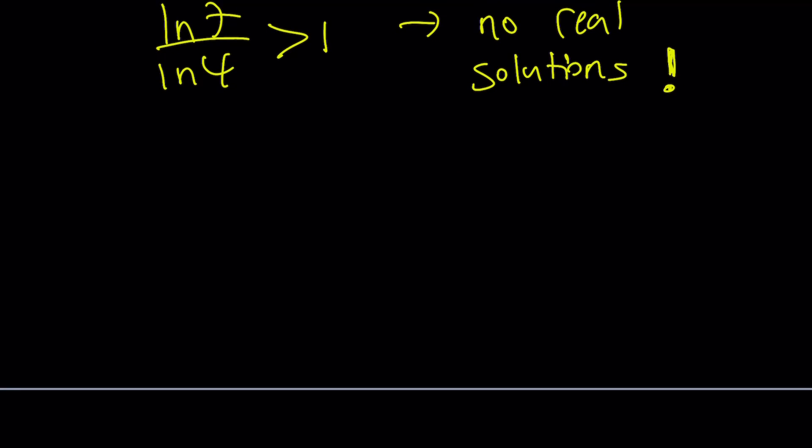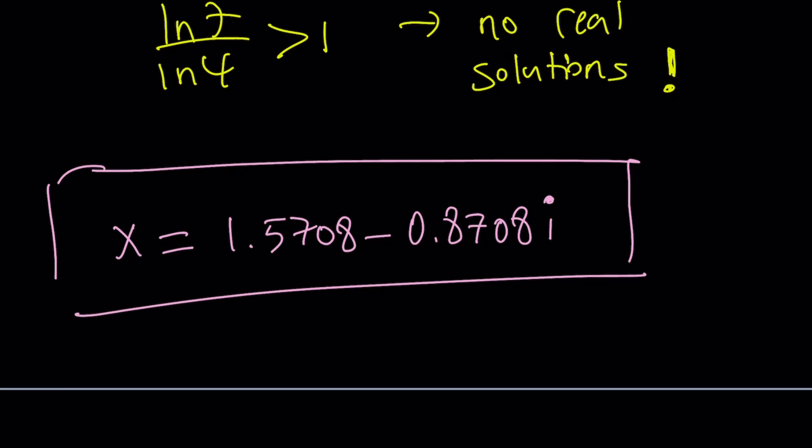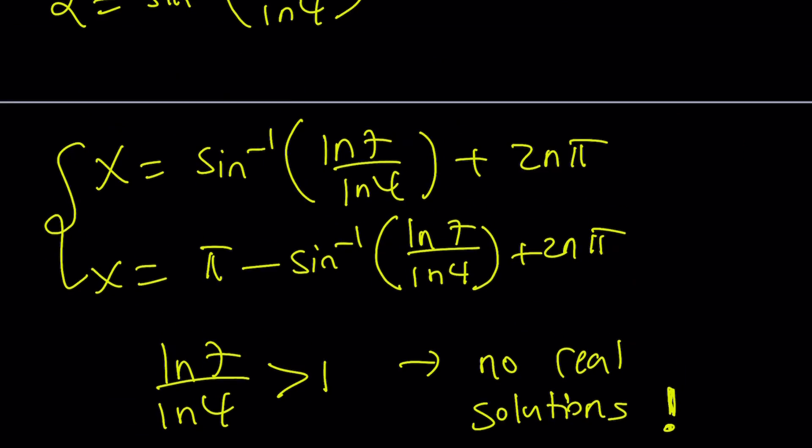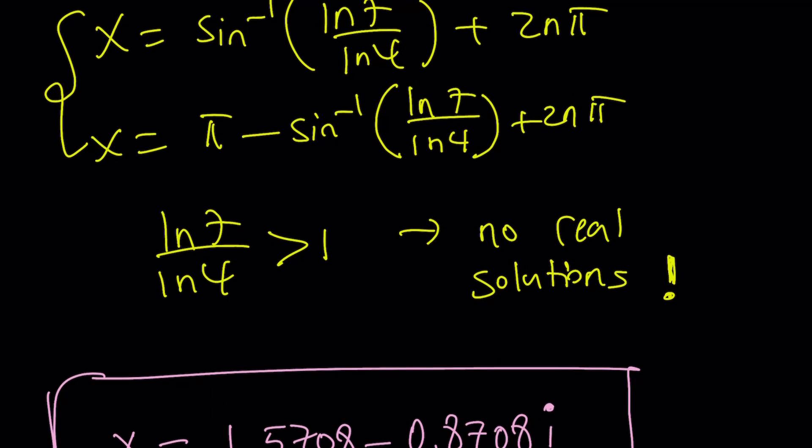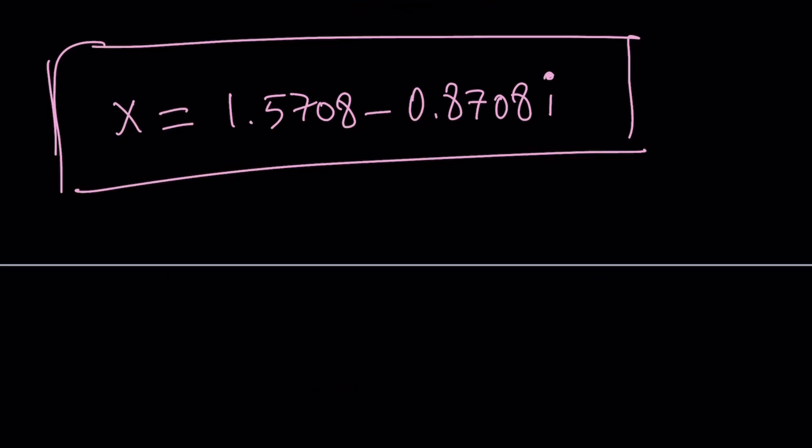So there are complex solutions. And as a bonus, I'm going to give you one of the complex solutions. x equals 1.5708 minus 0.8708i. i being the number whose square equals negative 1. How did I get that? Thanks to Wolfram Alpha, it gave me the solution. Obviously, you couldn't find it otherwise. You could write an expression, but trust me, it's very ugly. I don't think you want me to go over that because that would take forever.